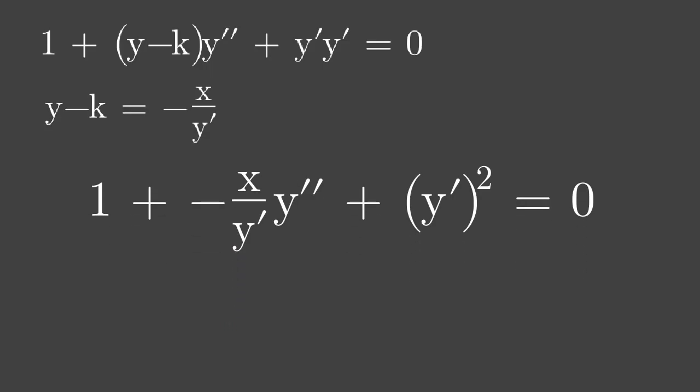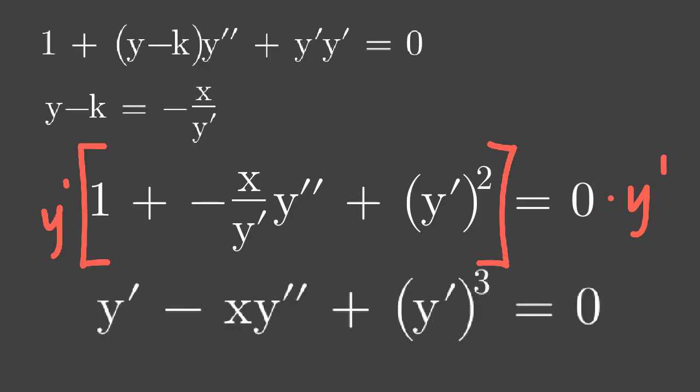Multiply both sides by y prime to avoid denominator in the final answer. And that is y prime minus x y double prime plus cube of y prime equals 0.